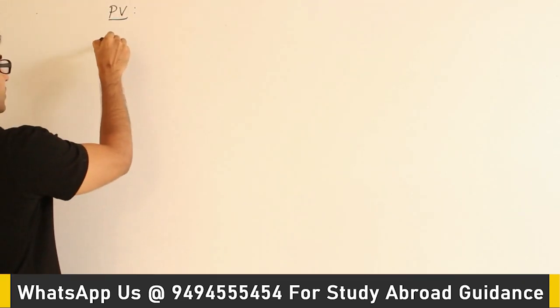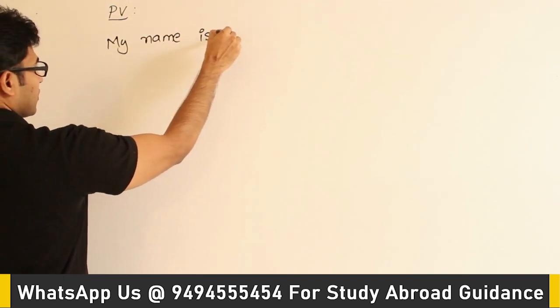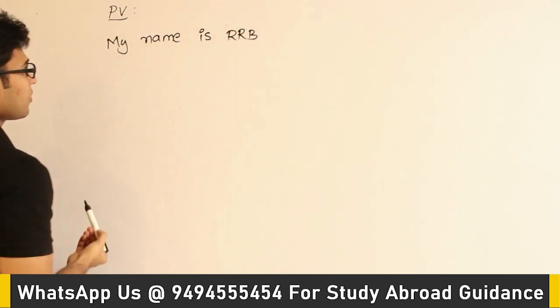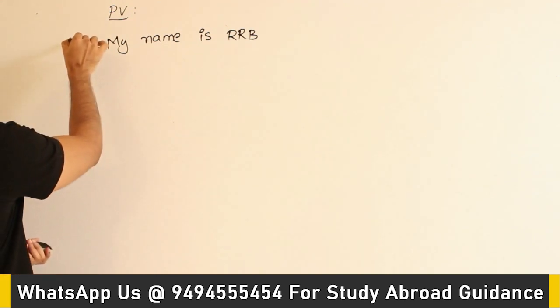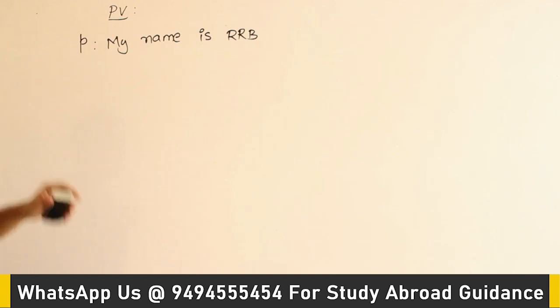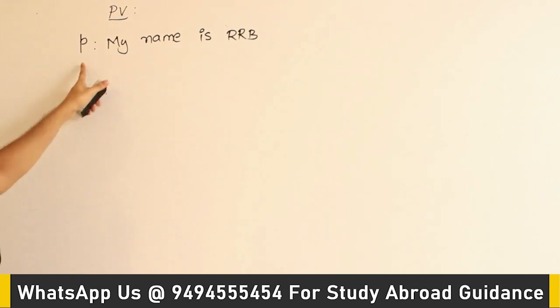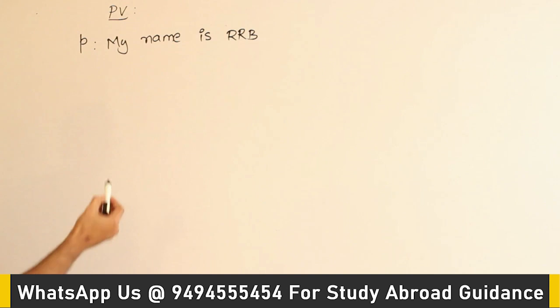For example, take the proposition 'my name is Ravendra Babu Ravla.' We can use the letter p — small letters are generally used, though capital letters are fine too. This variable is now representing that particular statement. We are going to form compound statements by using these variables and something called connectives.